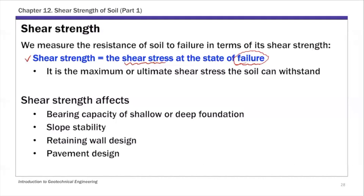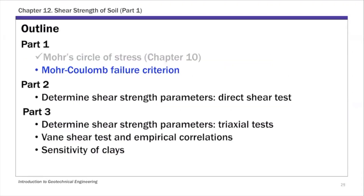So what do we call failure in soil? There are many different failure criteria. The most commonly used one in soil mechanics is the Mohr-Coulomb failure criteria. That's the topic for today's lecture — the second bullet point in part one of this chapter.